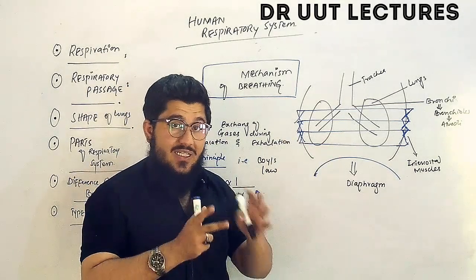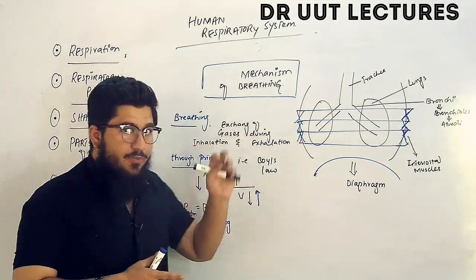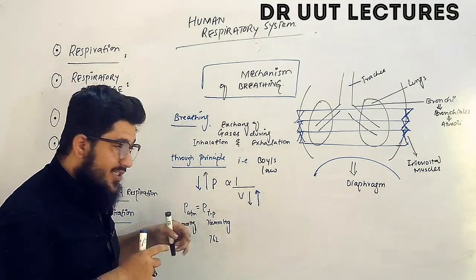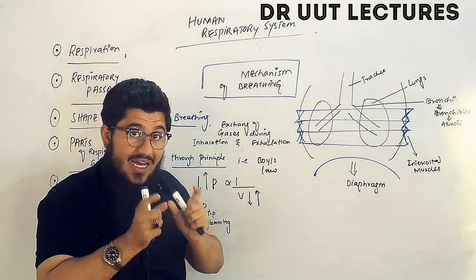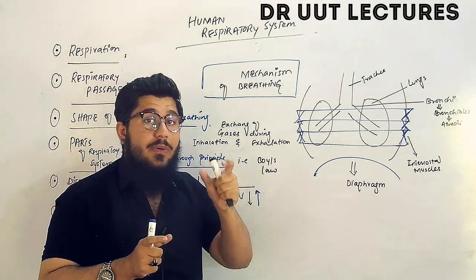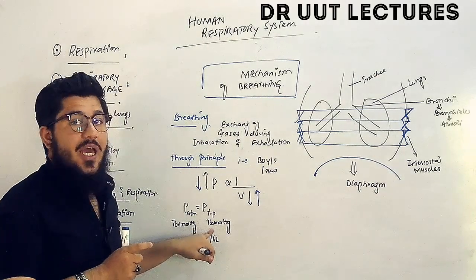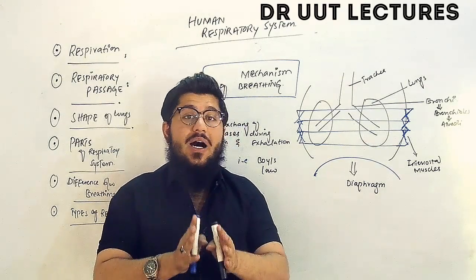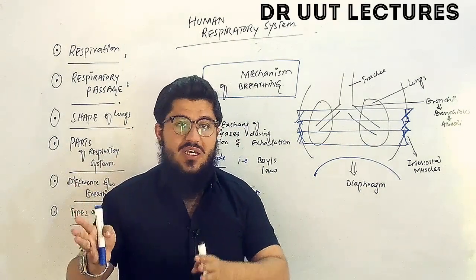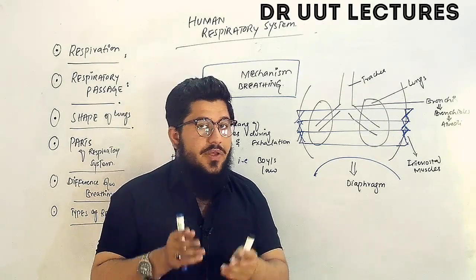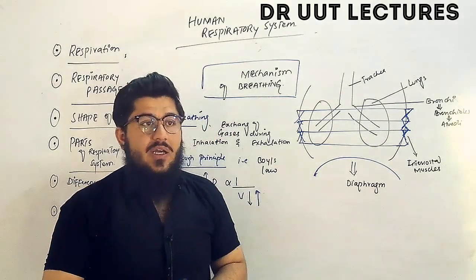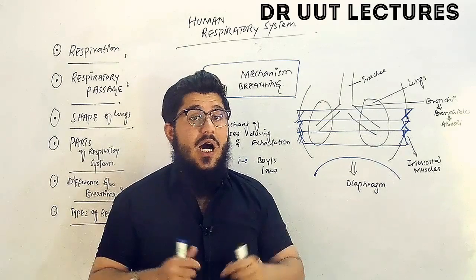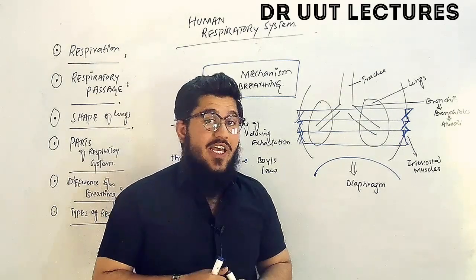Now let's apply this principle to the breathing mechanism. The atmospheric pressure is 760 mmHg, and the same pressure is present inside the lungs — we call it intrapleural pressure — which is also 760 mmHg. Since the pressure inside and outside is the same, there will be no exchange or transfer of gases. So how does this exchange actually take place?